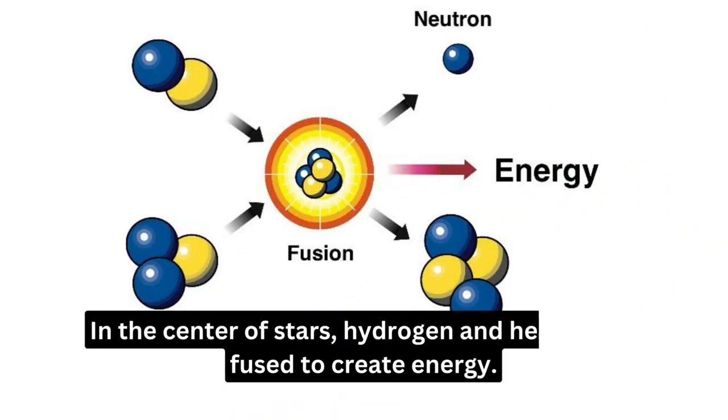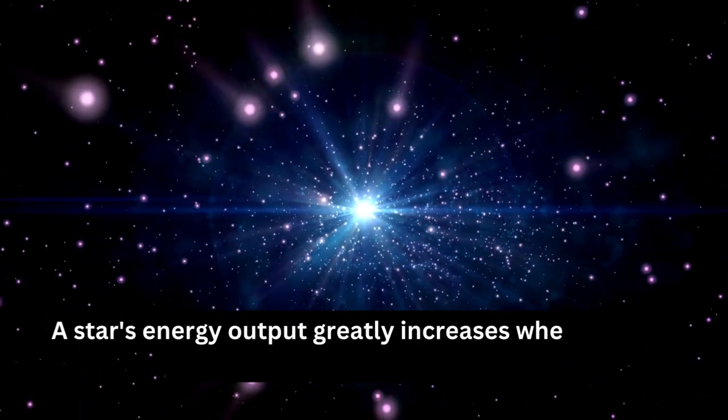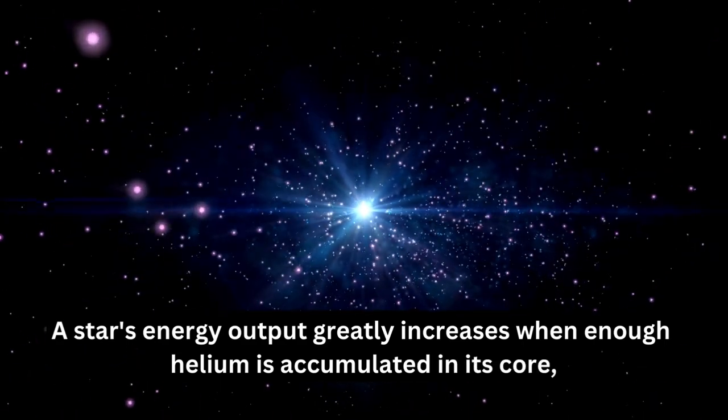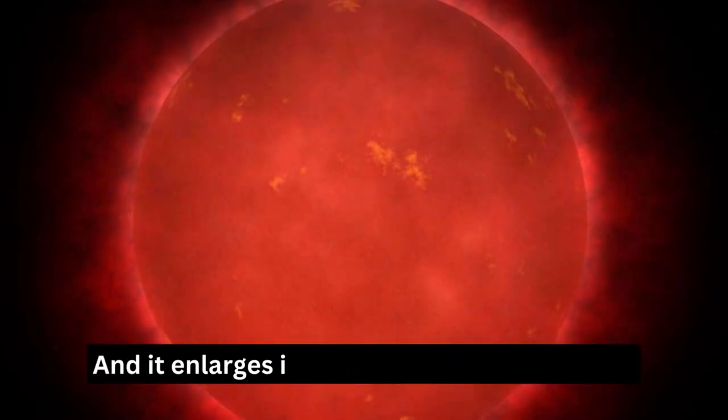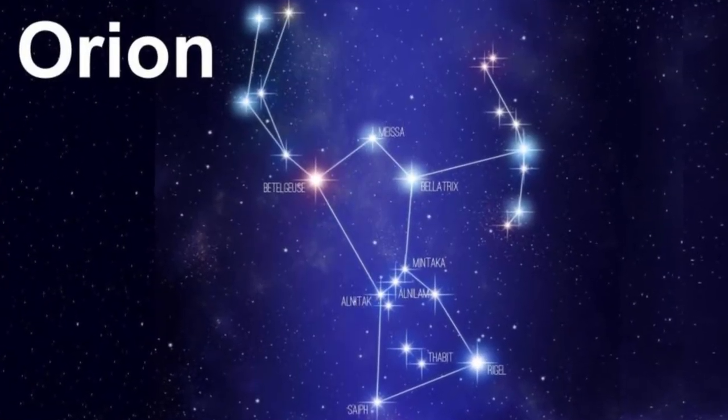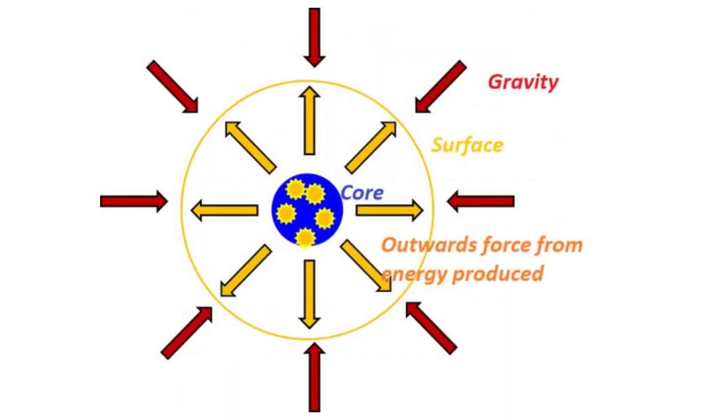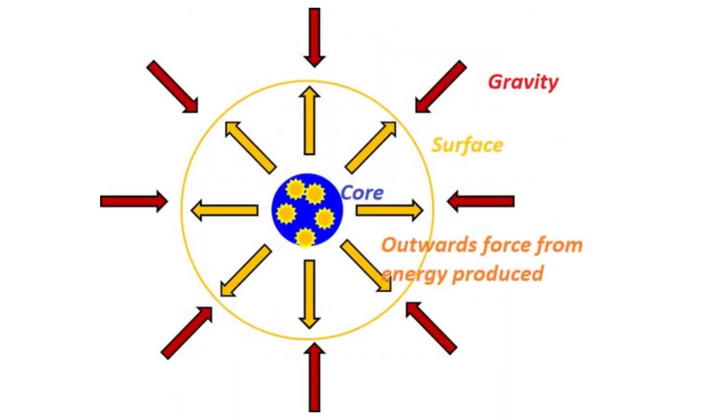In the center of stars, hydrogen and helium are fused to create energy. A star's energy output greatly increases when enough helium is accumulated in its core, and it enlarges into a red giant or supergiant, like Betelgeuse in the direction of Orion. To counteract the relentless pressure of gravity, such stars' cores create heavier elements one at a time.